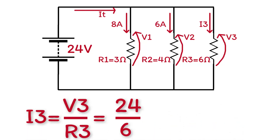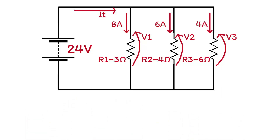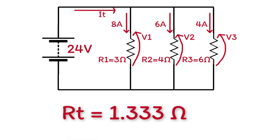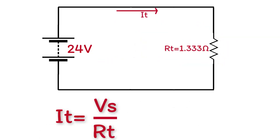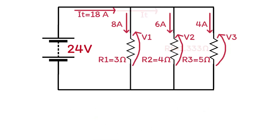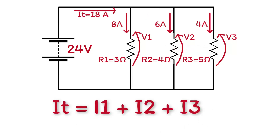I3 equals 24 over 6, which equals 4 amps. The total resistance for parallel resistors is found using: 1 over R_total equals 1 over R1 plus 1 over R2 plus 1 over R3, giving 1 over 3 plus 1 over 4 plus 1 over 6, so R_total equals 1.333 ohms. Therefore I_total equals 24 volts over 1.333, which equals 18 amps. Note that I1 plus I2 plus I3 also equals 18 amps.